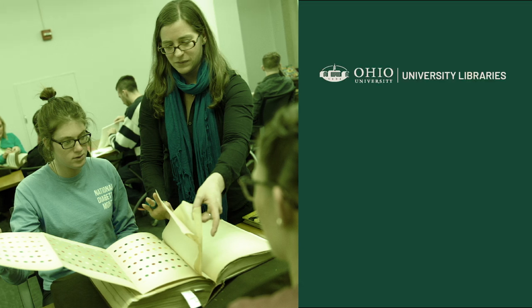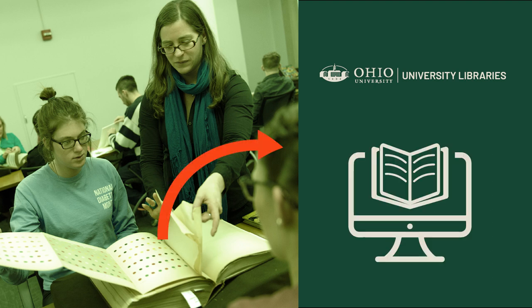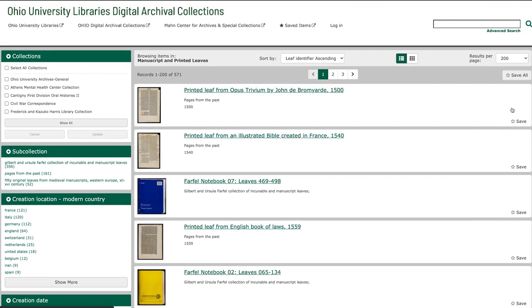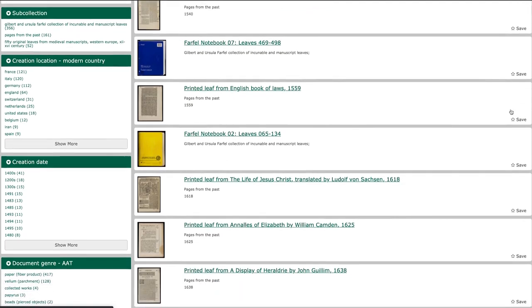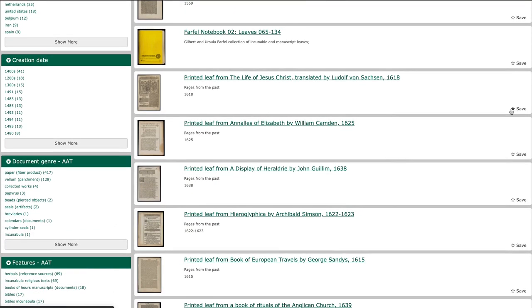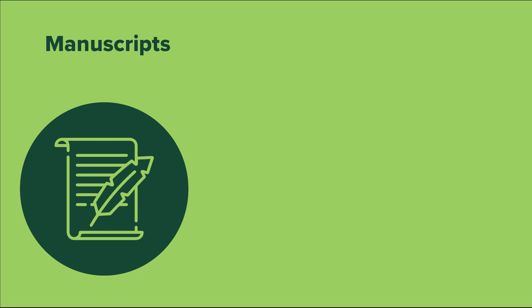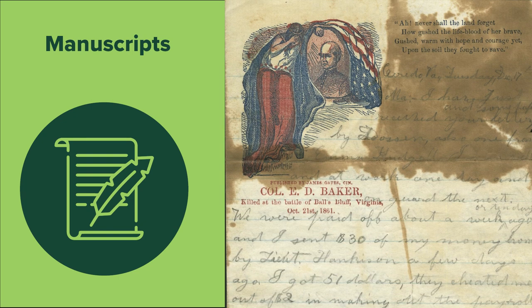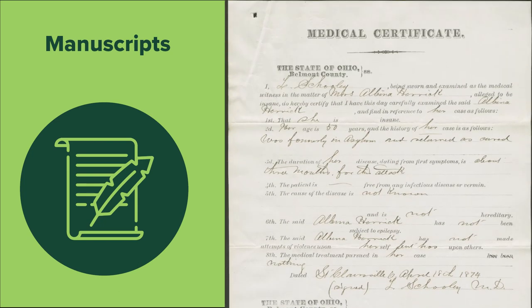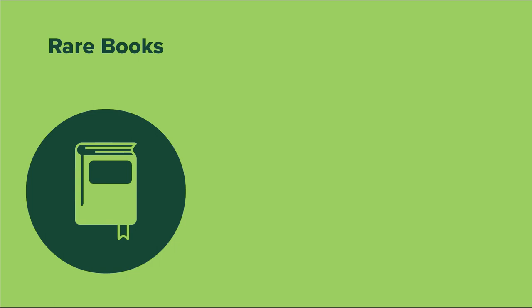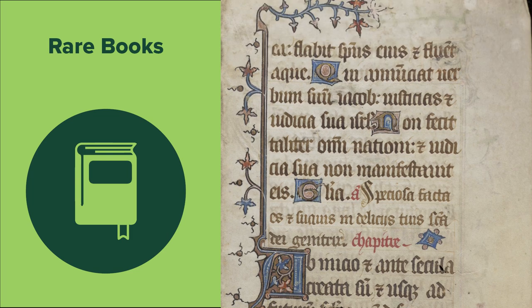Ohio University Libraries have also made large collections of these sources available to anyone by creating digital reproductions. These reproductions are provided for universal viewing on the library's Digital Archives website. You can find digitized manuscript materials ranging from Civil War letters to asylum records, as well as digitized representations of the library's rare books and special collections such as medieval manuscript leaves.